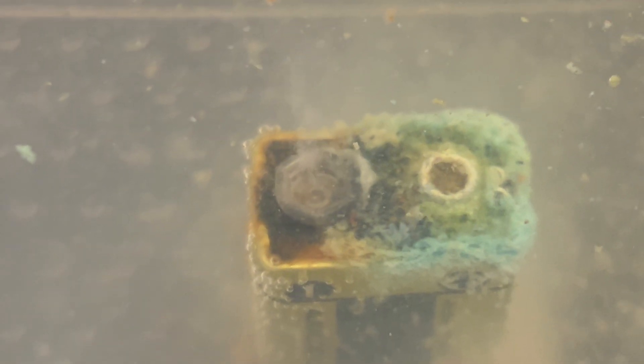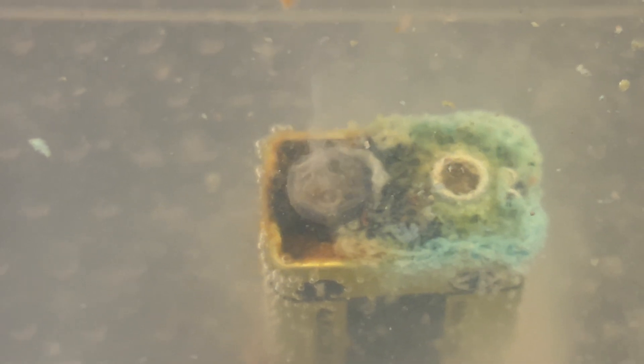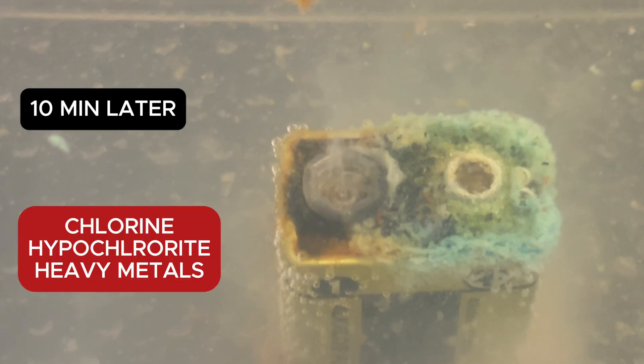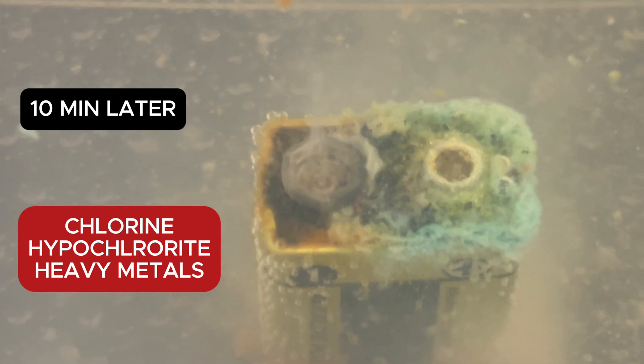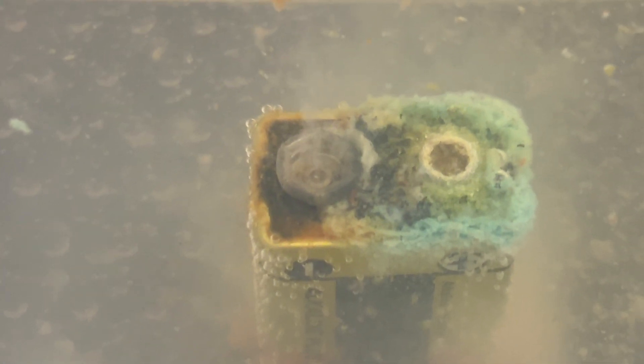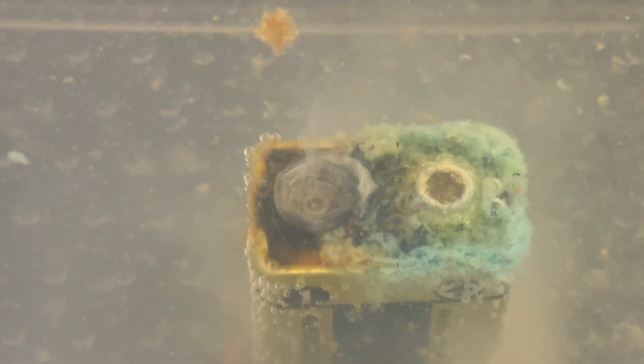However, a critical problem emerges. Notice the green, cloudy water forming at the anode. After just 10 minutes of electrolysis, the water has transformed into an undrinkable, contaminated solution, clearly demonstrating the risks of uncontrolled electrolysis in standard hydrogen water bottles.